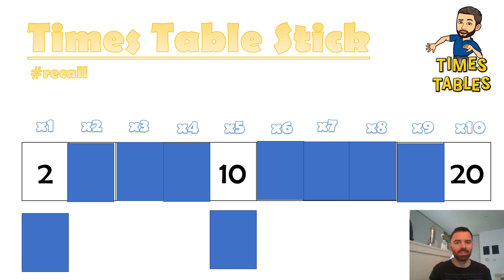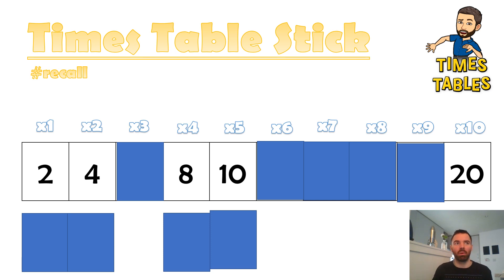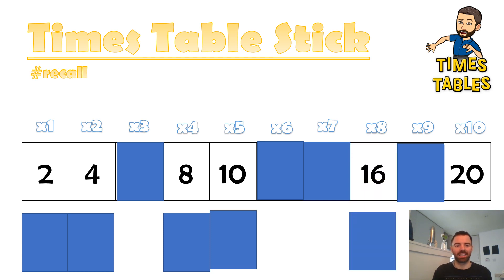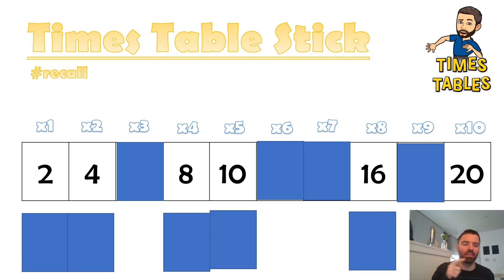Double two — you get four. Double four is eight. And can you double eight? Eight add eight — double eight is sixteen. You can see that two doubled is four, four doubled is eight. Let's go: two, four, eight, ten, sixteen, twenty. Your turn: two, four, eight, ten, sixteen, twenty. Can we go back? Twenty, sixteen, ten, eight, four, two. Your turn: twenty, sixteen, ten, eight, four, two.